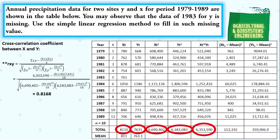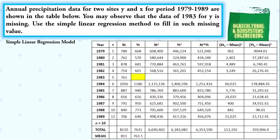After getting the cross-correlation coefficient, we are now able to solve for the missing data value. The problem requires us to use the linear regression method. The formula is Yt = A + B·Xt. In the problem, the year 1983 is the 5th data point from the table. With this, we obtain the equation: Y5 = A + B·X5.